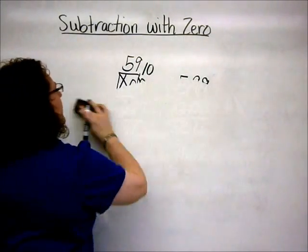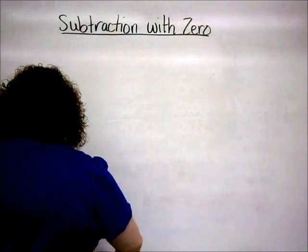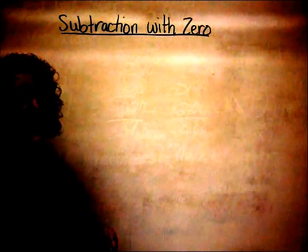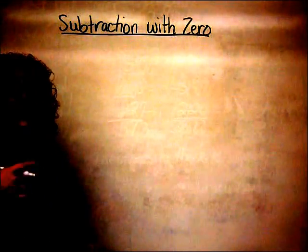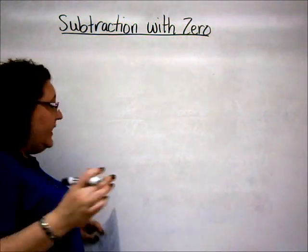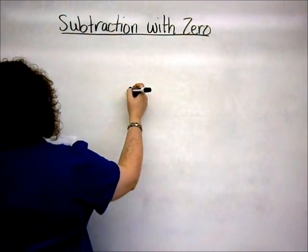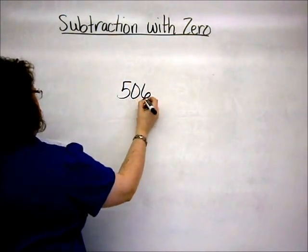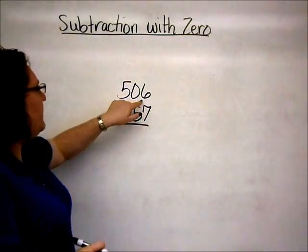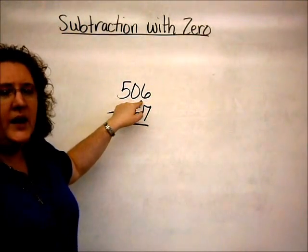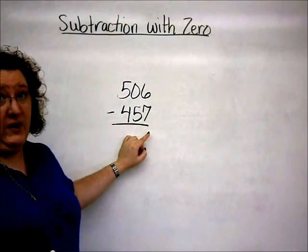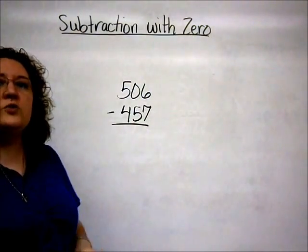Now, the one time that the mental math, when using zeros, will not work, is when the digit in the ones place happens not to be a zero. Then, the subtraction would have to go on either using the traditional method, or using the box method. So the box method will actually work either way. Let's take a look at an example there. Let's say we have five hundred six minus four hundred fifty-seven. So we notice here that we've got a six in the ones place, rather than a zero. So subtracting one from my problem really won't help me. It actually doesn't make it any better at all.